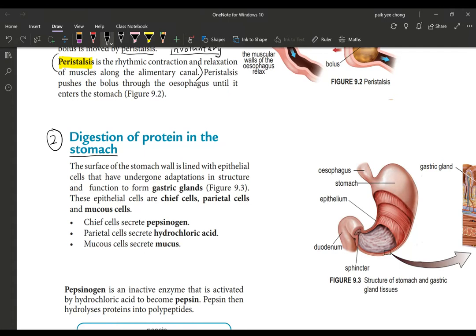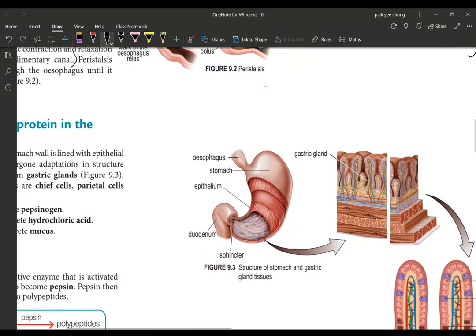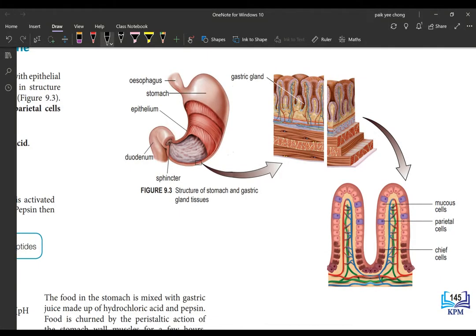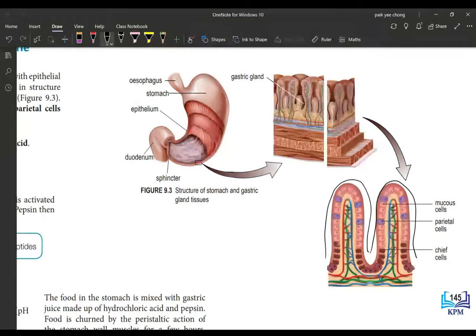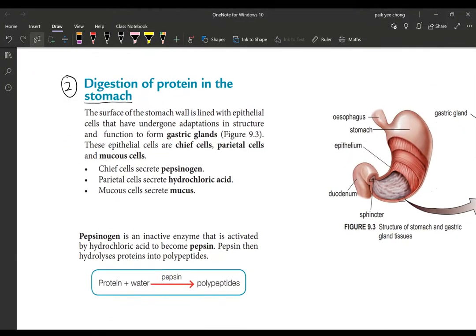Next, digestion of protein in the stomach. The surface of the stomach wall is lined with epithelial cells that have undergone adaptation. Inside the stomach wall you have epithelial cells. If you magnify these folds, they're highly folded to increase the surface area. You will have different types of epithelial cells on the surface. There are three types.